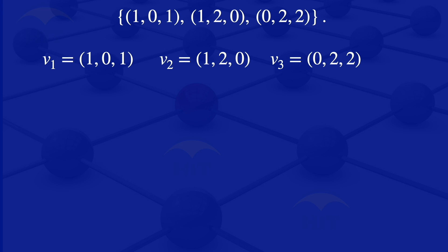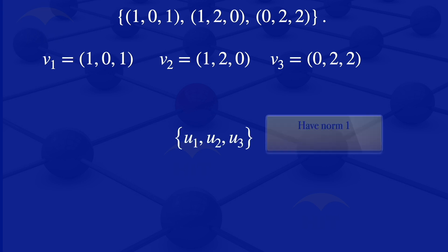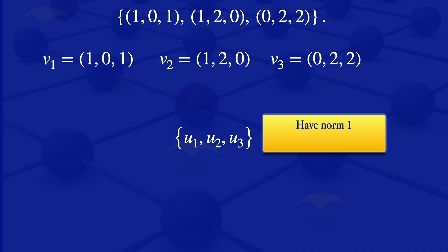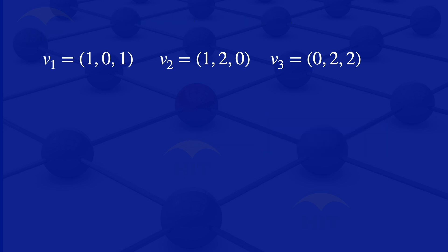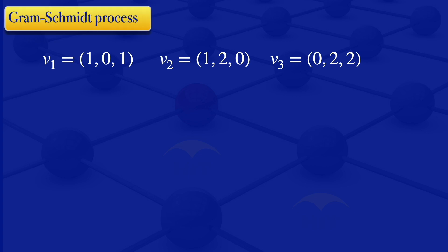What we are looking for is a set of vectors U1, U2, and U3, where those vectors each have a norm of 1 and are pairwise orthogonal. To find that set of vectors U1, U2, and U3, I am going to use the Gram-Schmidt process.